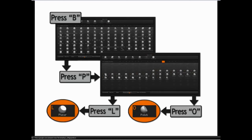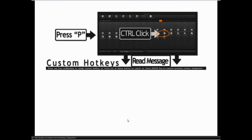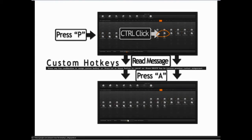Every brush has another secondary letter assigned to it. Planar for example has L, polish has O. But you may want to assign your own hotkey — your own secondary key — so L might not make sense to you for the planar brush, but A might. To do this, press B to get the brush popup, P to isolate the planar brushes, then Ctrl+click on the brush you want to change, read the message that comes up, and press the letter you want assigned. In this case we press A, and A becomes the new secondary letter.